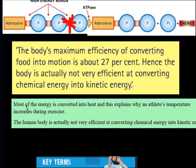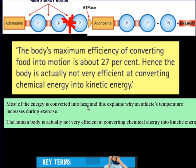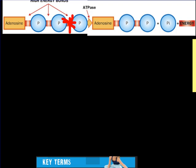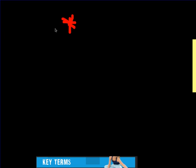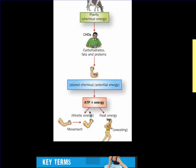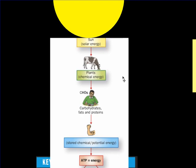It's worth noting that most of the energy is converted into heat, and that explains why our temperature goes up during exercise. The human body is not that efficient at converting chemical energy into kinetic energy. When we look at our flow diagram, the kinetic energy creates this movement, and the heat energy causes sweating and increasing temperature. That's where most of the energy goes.